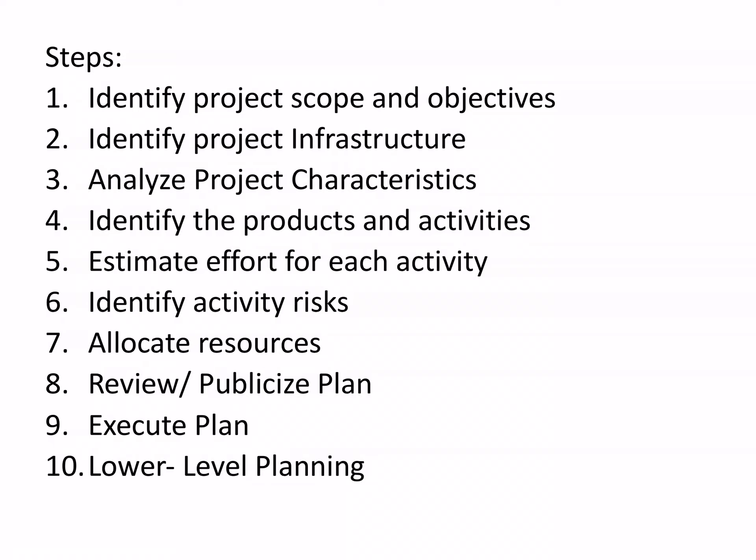Step two: identify project infrastructure. Step three: analyze project characteristics. Step four: identify the products and activities — you have to identify which activities produce which products. Products might be as simple as a trained staff member or particular documentation. A product need not be a finished deliverable; we are talking about all the products of the various steps and activities. Then, step five: estimate efforts for each activity.